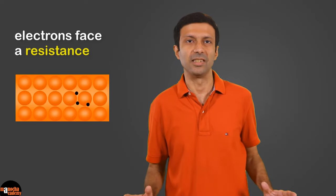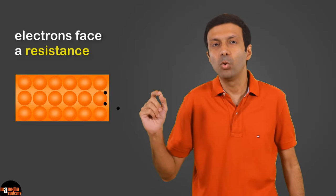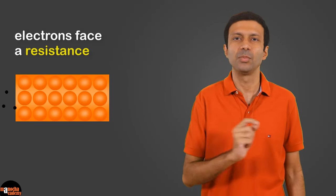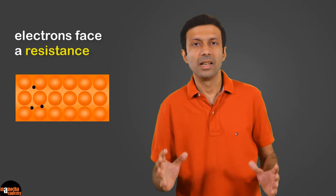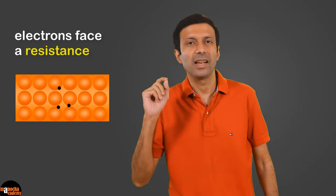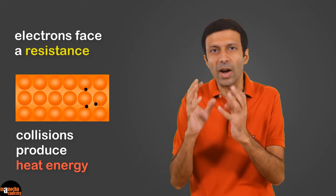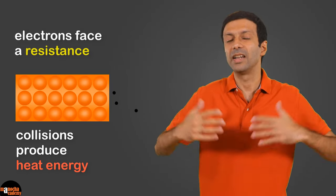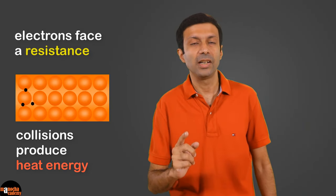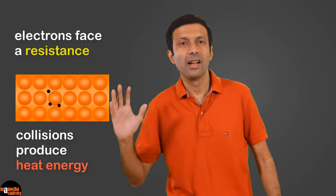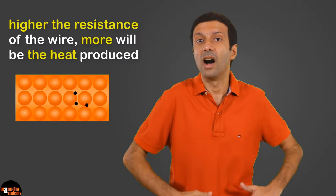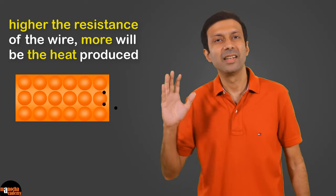Similarly, when electric current flows through a resistance wire, the free electrons are moving through the wire. During their motion, the electrons face friction — or what we call resistance — because the moving electrons collide with the atoms in the wire. During the collision, some of the kinetic energy is transferred to the atoms in the wire, so the atoms vibrate with greater energy and the temperature of the wire increases. So heat energy is produced in the resistance wire when current passes through it, and higher the resistance of the wire, more will be the heat produced.